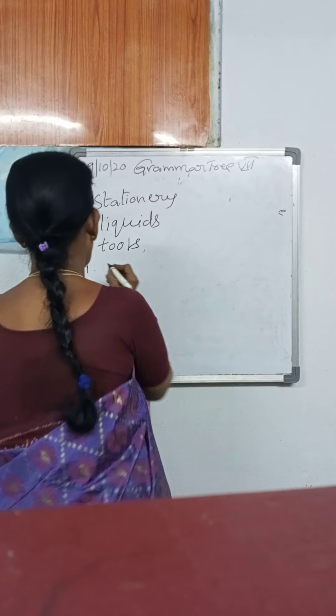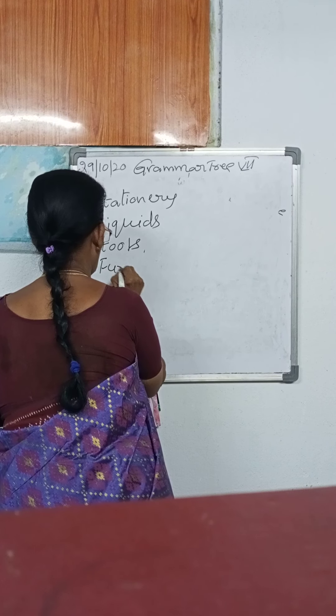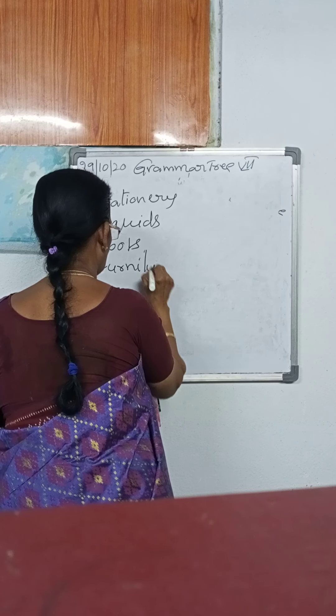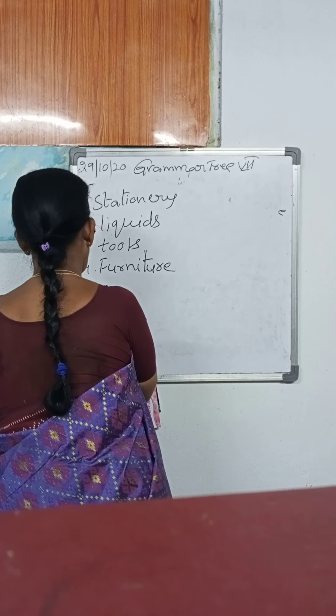Fourth one: tables, chairs, and beds are generally made of wood. All these — sofa, chair, table — what do we call them? All these are known as furniture. Furniture is singular; there is no plural, only furniture.